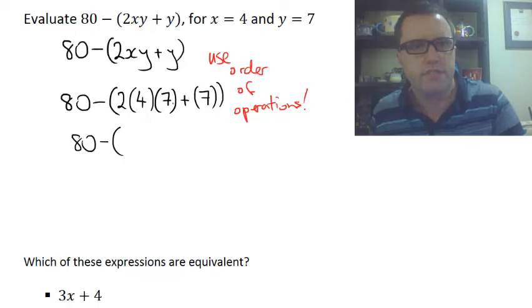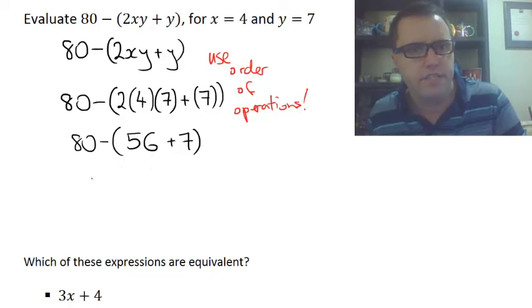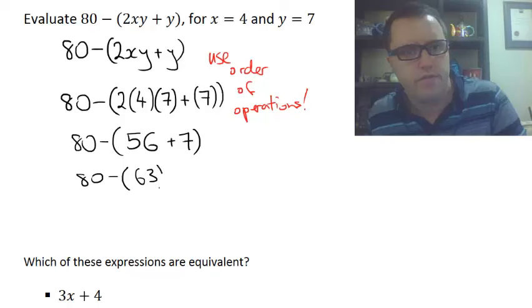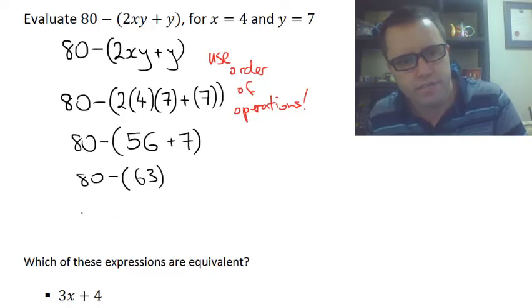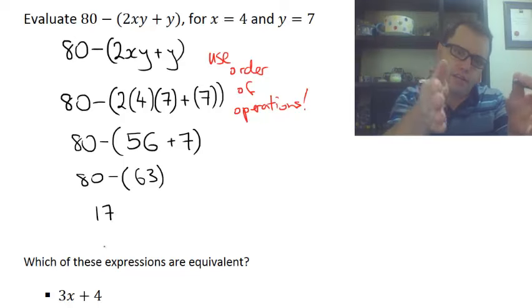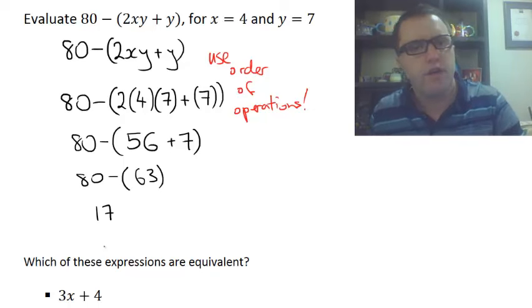So 2 times 4 is 8. Times 7 is 56. Plus 7. So 56 and 7 is 63. And I've got 80 minus 63, which is 17. So there's our expression there. So it gets smaller and smaller and smaller down to where we're just left with one number.